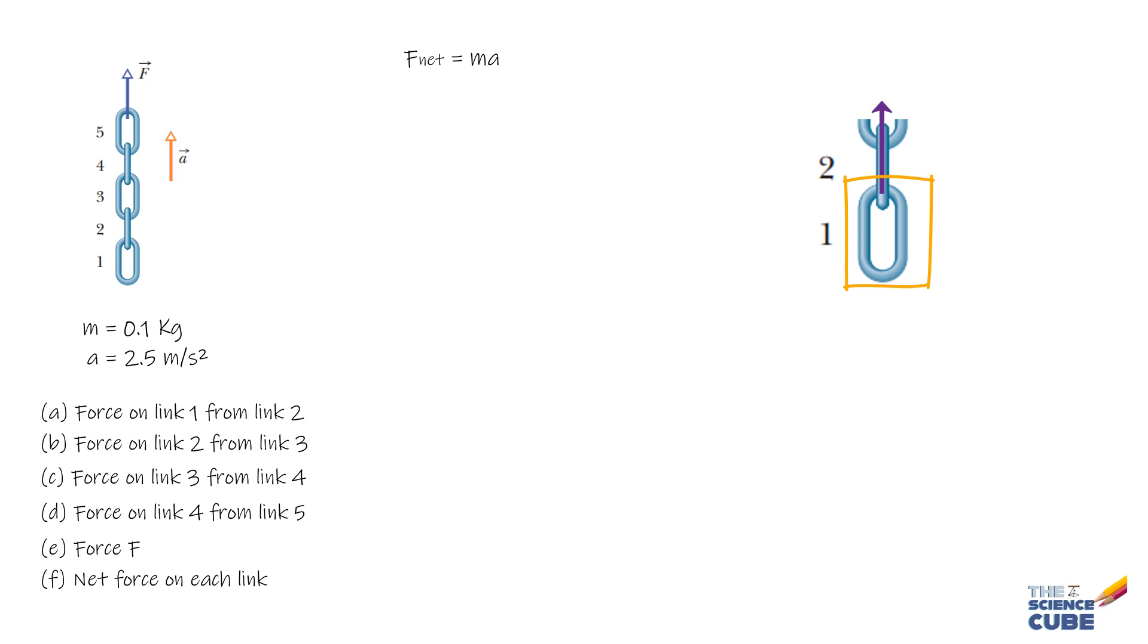One force we can see is the force on link 1 due to link 2, that we have to find. Let us label it as F2 on 1. Then we can see M1G acting downwards, where M1 is the mass of link 1, which is 0.1 kilogram.